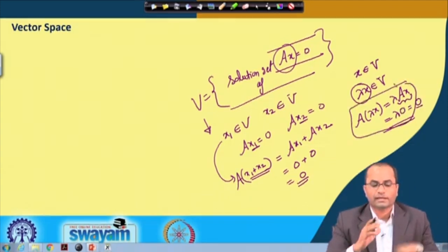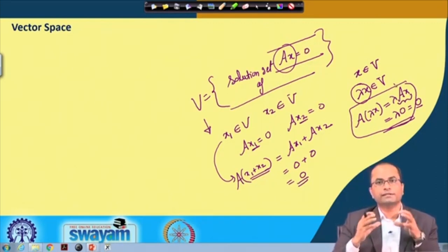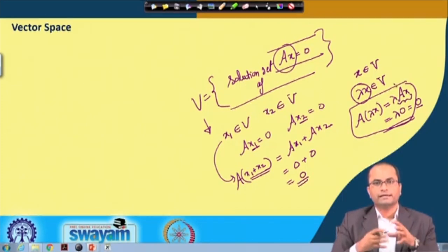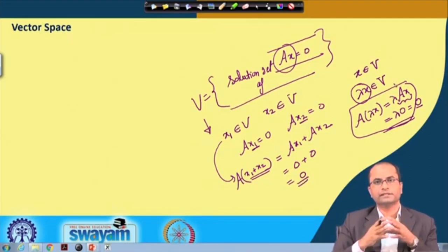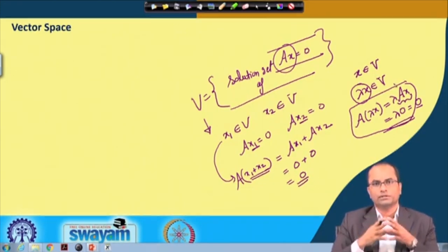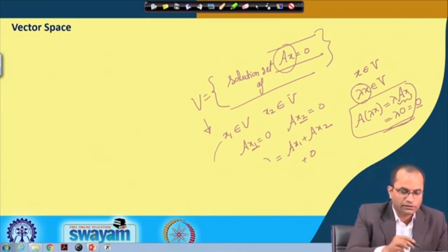So what we have seen is that this set is a kind of special set: if we take any two elements and add them, the result is also in the set, and if we multiply any element by a real number, the new element is also in the set V. This leads us to the concept of vector spaces.